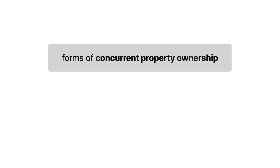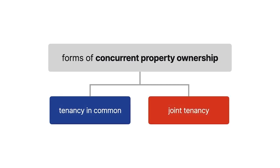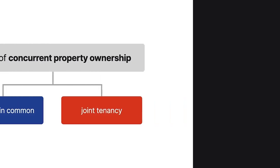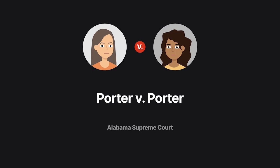There are multiple forms of concurrent property ownership, two of which are tenancy in common and joint tenancy. In Porter v. Porter, we explore the differences between the two, as well as how a joint tenancy is severed.